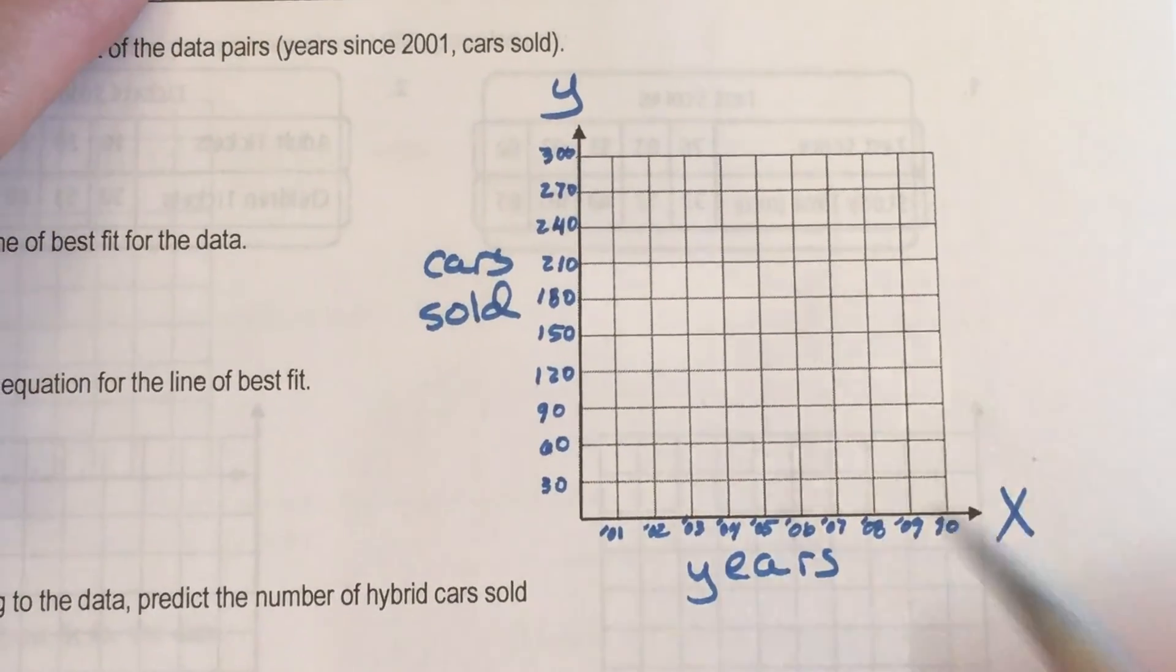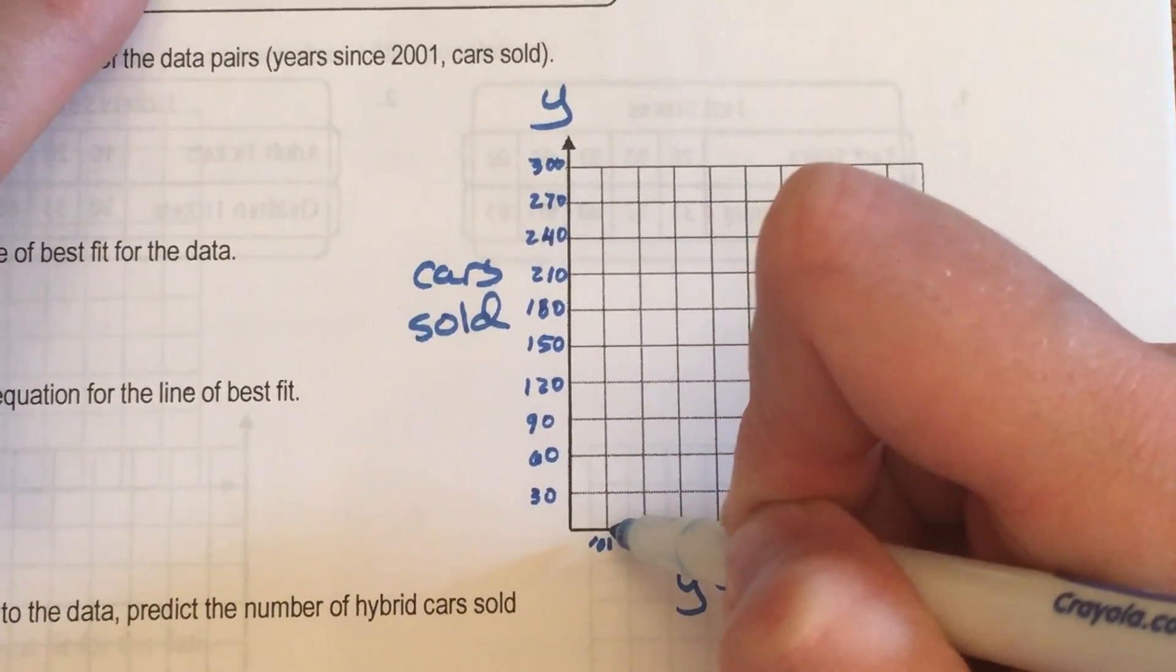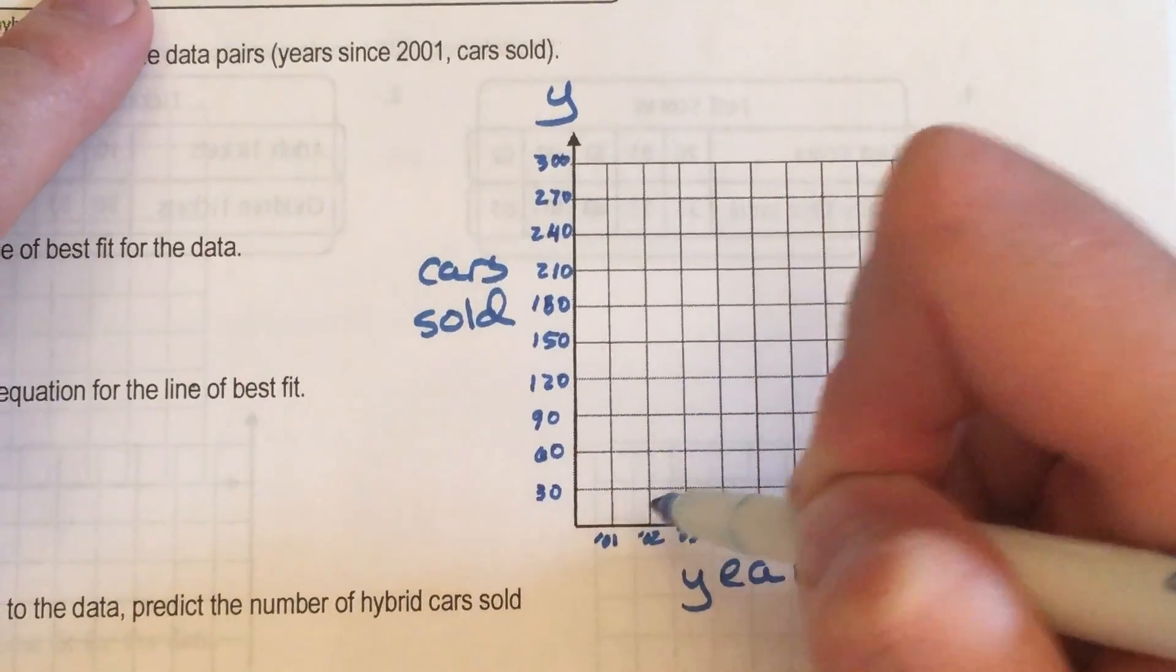Woo. Okay. Let's plot our points. In the year 2001, we sold 20 cars.